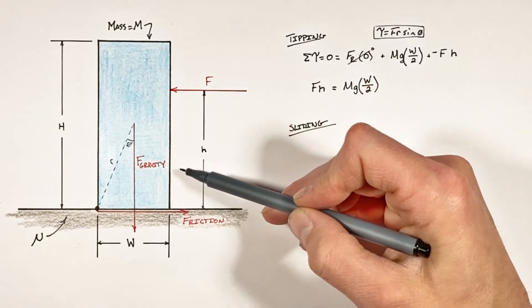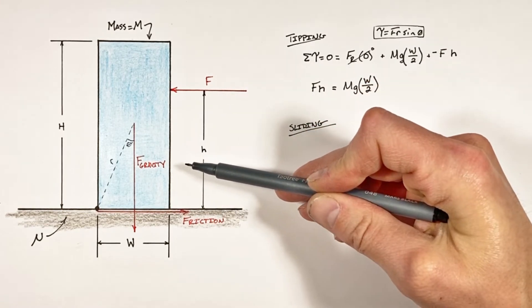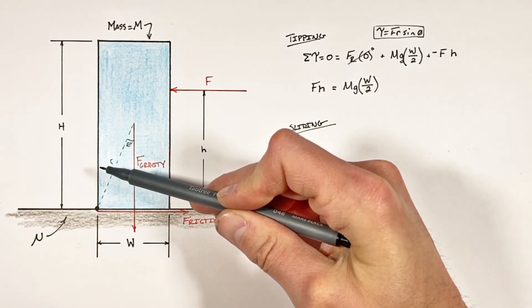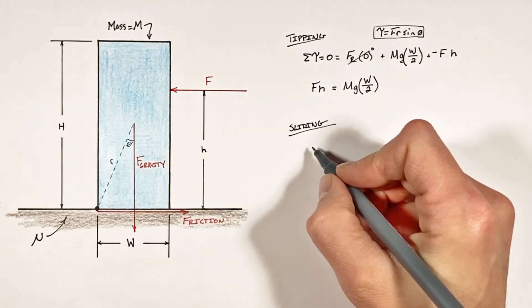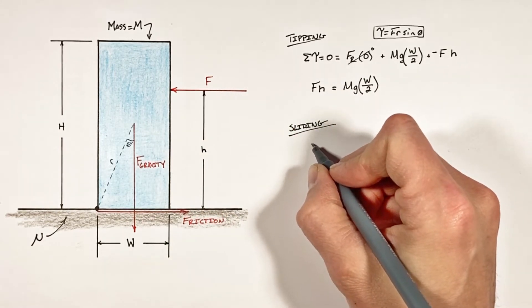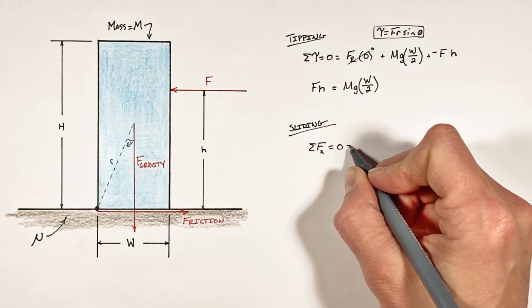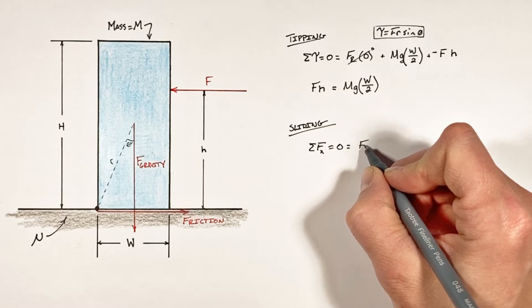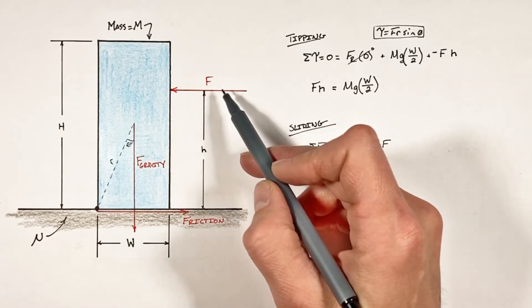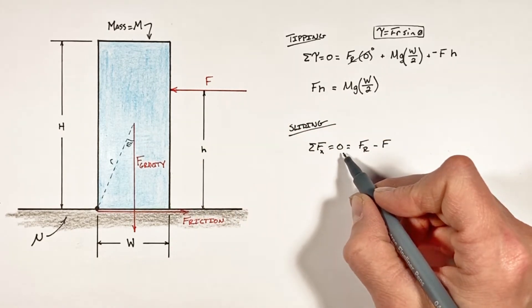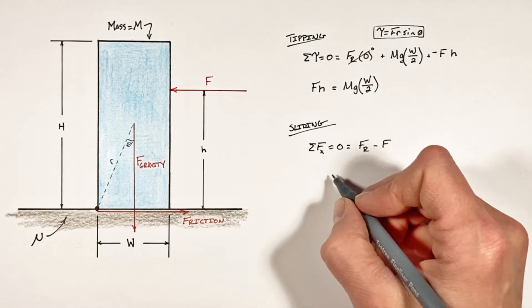So if this force is down low on the block, the block is simply going to slide along the ground. And just as the block begins to slide, we know the sum of all forces on the block in the x-axis is going to be zero. That is to say, the friction force to the right minus the push force to the left is going to be zero.